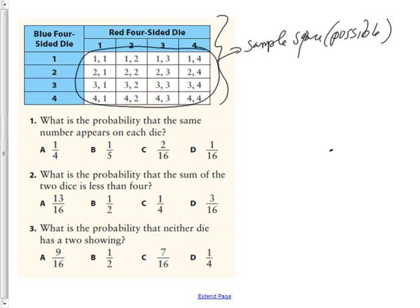So as we can see, before I even do the question, I know that there are 16 possible outcomes, right? So without reading the questions, but question 1 says, what's the probability that the same number appears on each die? So otherwise known as doubles, there are 4 questions out of those 16.